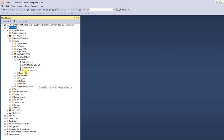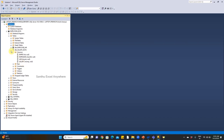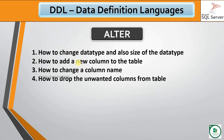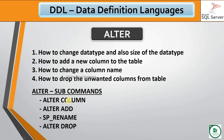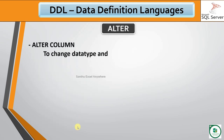In this table you will create and practice. We will learn how to change the data type and size of the same column, how to add a new column to the table, how to change a column name, and how to drop unwanted columns from the table. We will delete specific columns using sub-commands under ALTER.